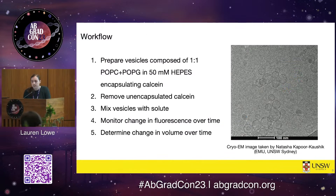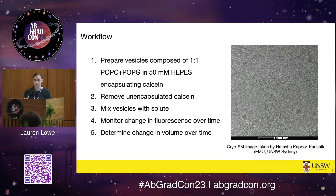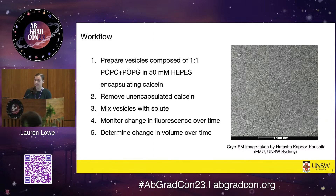The basic workflow for my experiments is to first prepare vesicles composed of an equal mixture of POPC and POPG in 50 mM HEPES buffer, buffering around physiological pH. These vesicles encapsulate the fluorescent dye calcein. I then remove all unencapsulated calcein, mix the vesicles with the solute or nutrient of interest, monitor changes in fluorescence over time, and determine changes in volume over time.